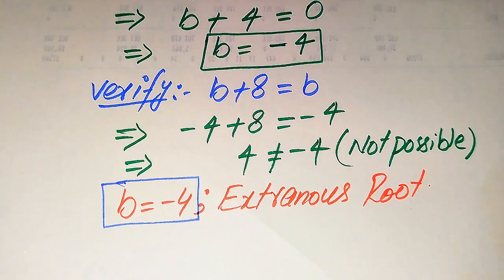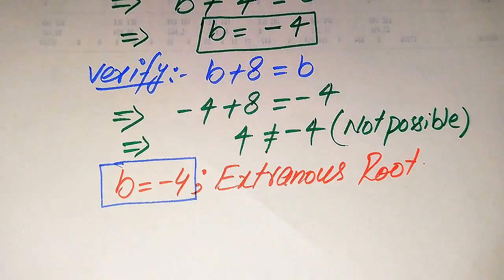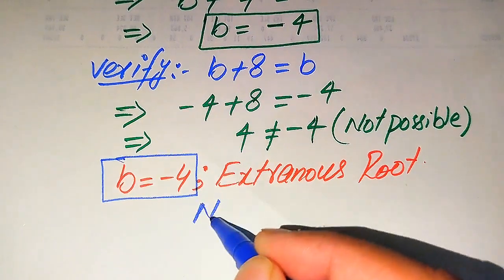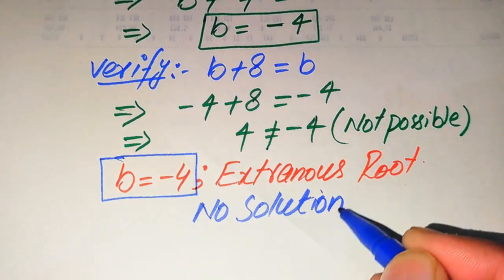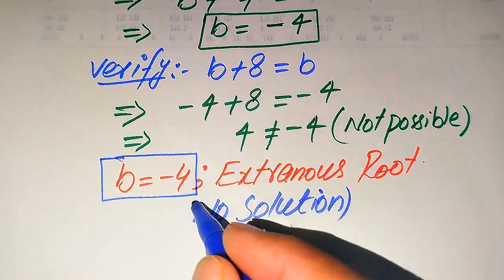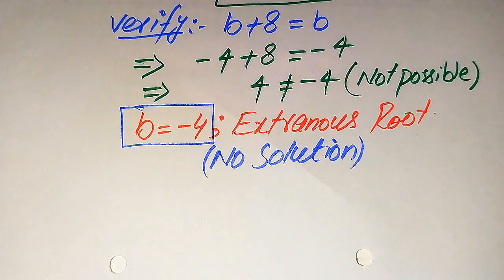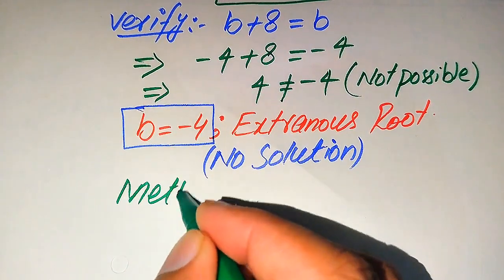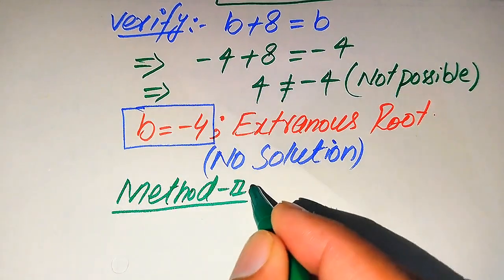Since we cannot get any other root of the given equation that satisfies the equation, this question has no solution. We cannot find any value of B which satisfies the given equation statement, so in the first method we conclude that this equation has no solution.